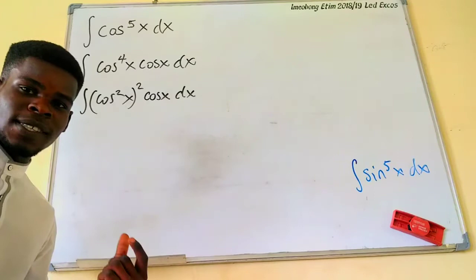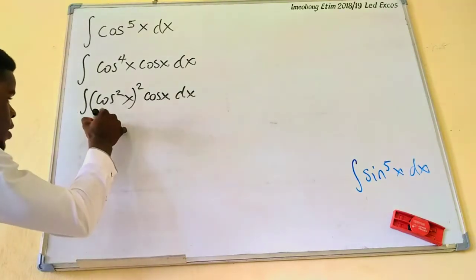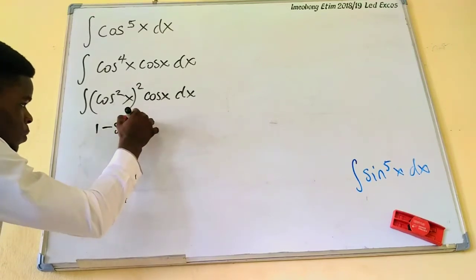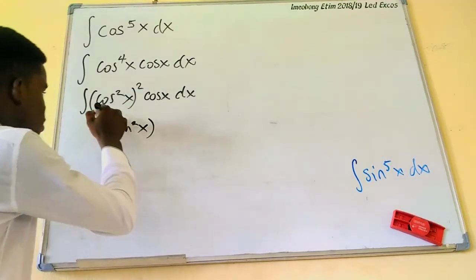Well, cosine of square is the same thing I'm saying 1 minus sine of square x. So I'm going to write this as 1 minus sine of square of that x angle. Okay, square of the angle, not just x, x, x.